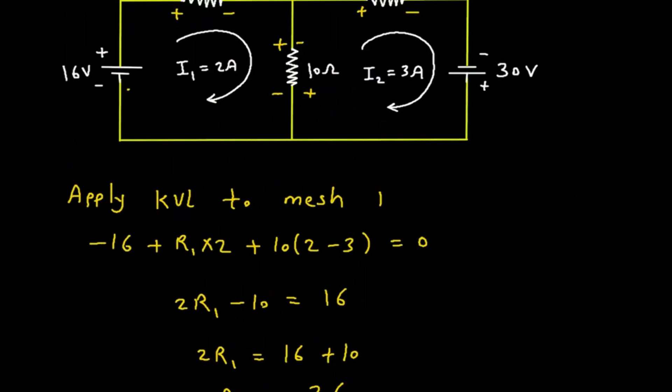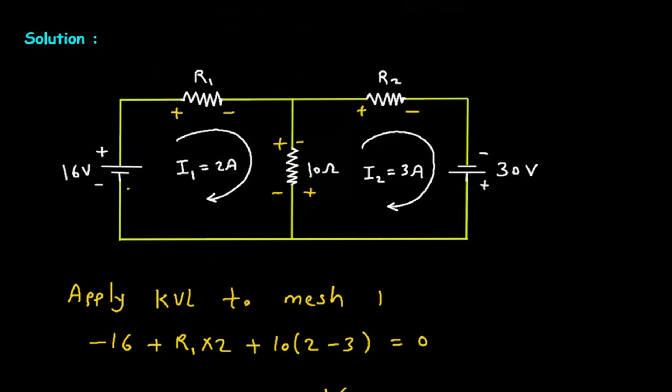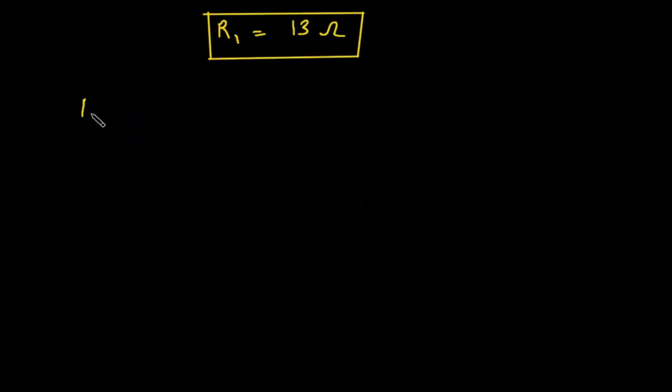Now to find R2, we will apply KVL to mesh number 2.